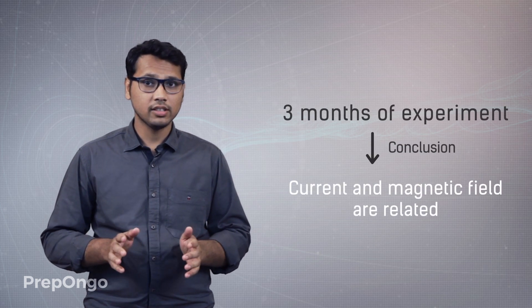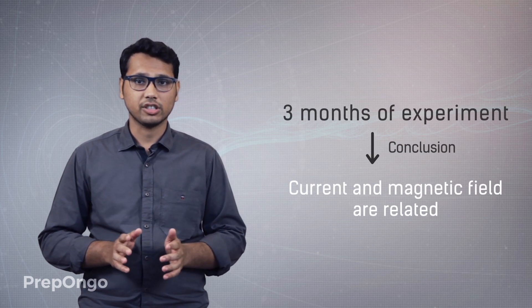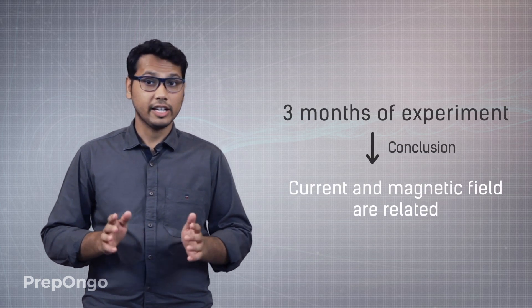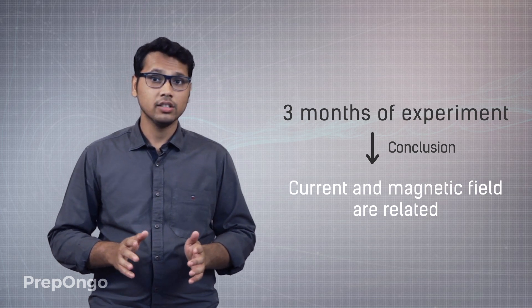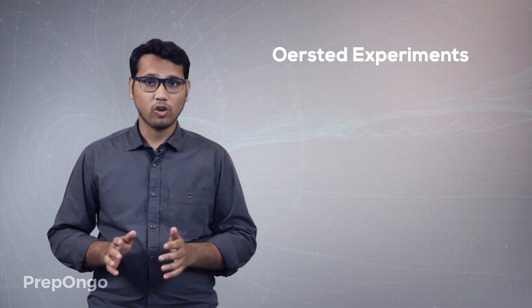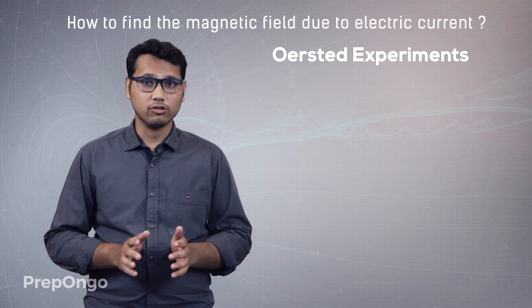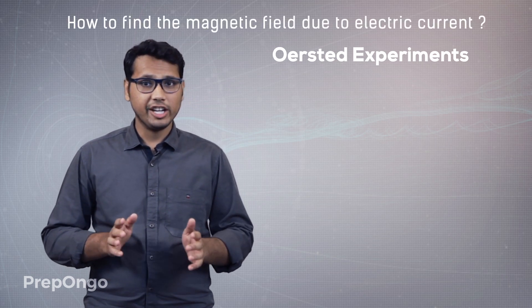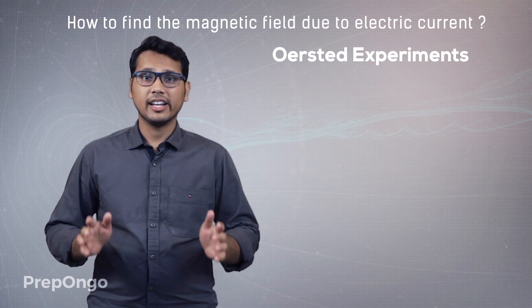After that, he did a lot of investigations and experiments, and after three months, he came out with the conclusion that there is a relation between electric current and magnetic field. Today we will try to learn what experiments Oersted performed and how we find out the magnetic field of that electric current.